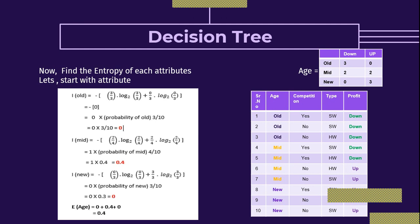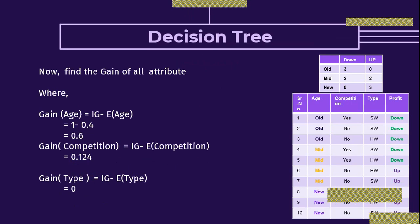So the entropy of attribute age is 0.4. This is our second step. In the first step we found the information gain of the target attribute profit. In the next step we find the entropy of each attribute. The entropy of attribute age is 0.4. Now find the gain of all attributes. Gain = IG − E(A) = 1 − 0.4 = 0.6. So gain of age is 0.6.